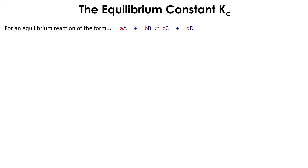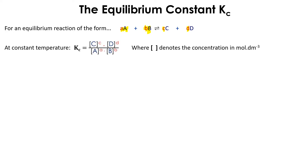To speak about the equilibrium constant, we should of course have an equation. Here's an equation: we have A plus B giving C plus D. The small letter represents the coefficient — that is, the number of moles of A, number of moles of B, number of moles of C, and number of moles of D. So simply, the equilibrium constant, which is Kc, is called Kc because it refers to concentration.